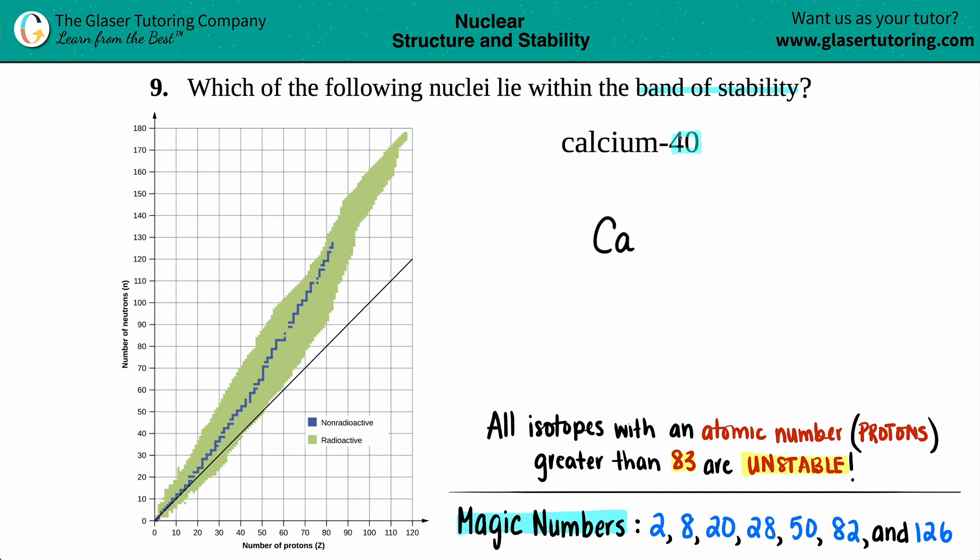Anytime that you have a number next to your element, this is always referencing the atomic mass or mass number, whichever one you want to say. So we'll say atomic mass.